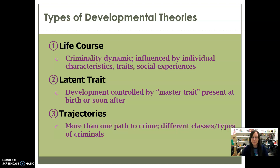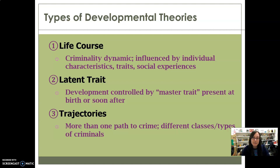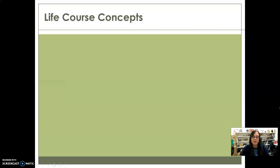When talking about developmental theories, there are three major types: life course, latent trait, and trajectories. Life course is what we're going to be talking about in this video. Life course theories are basically the idea that criminality is a dynamic thing — it is not static. It's constantly changing, and it's influenced by individual characteristics, traits, and social experiences.